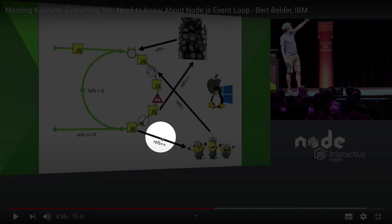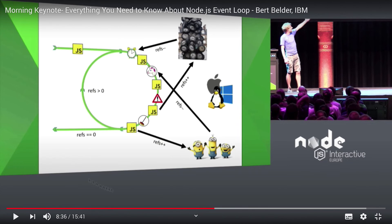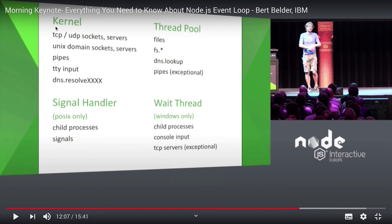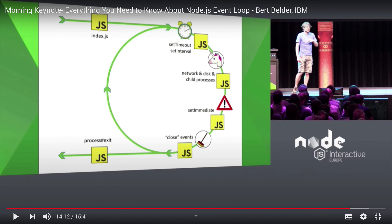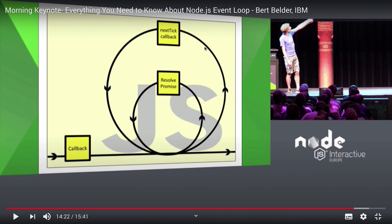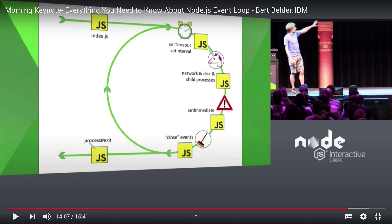Worker threads keep refs to make sure the event loop keeps running when there are more than zero refs. When they reach zero, the entire Node.js event loop exits. At any given time, Node.js is getting help from your kernel, the thread pool, and depending on your OS, a couple of other things. These JavaScript boxes have their own event loops — for example, if there's a promise, it runs in a loop and resolves with process.nextTick or similar.